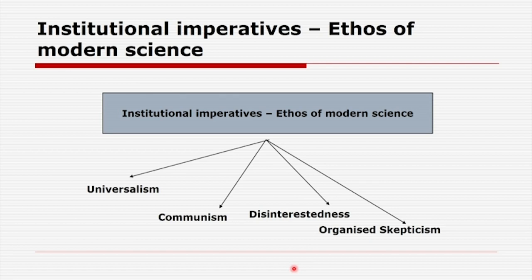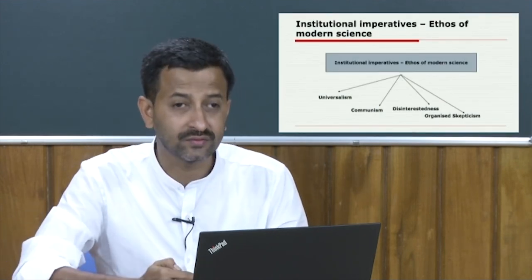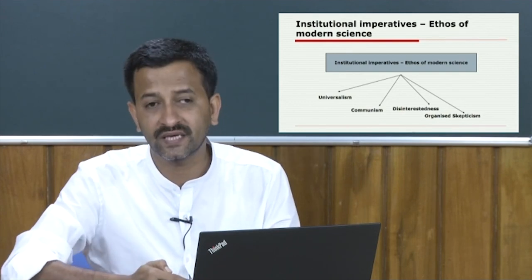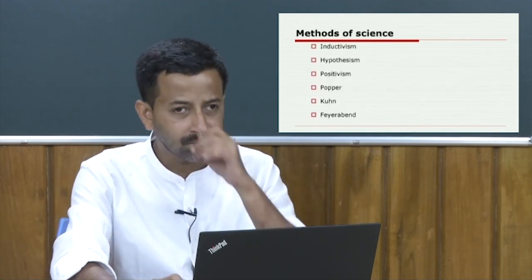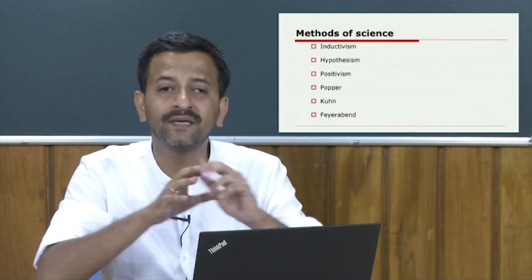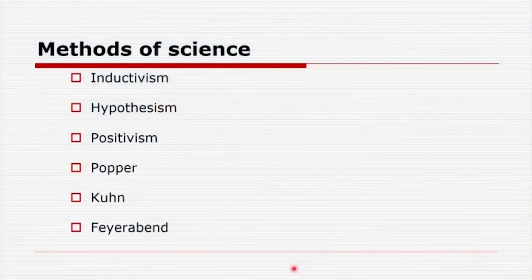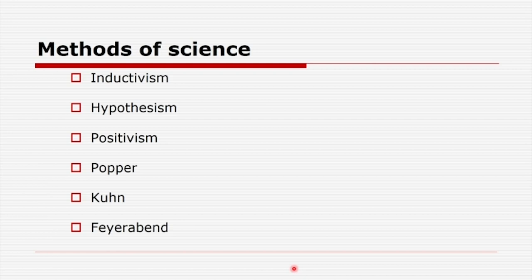Let us move from the goal of science to the methods of science. What may be the possible methods of science? It is not like there is only one method; there may be multiple methods. The question of what is the method of science is as old as science itself. Aristotle worked out a detailed answer, and his theory of scientific method exercised tremendous influence until around the 16th century.